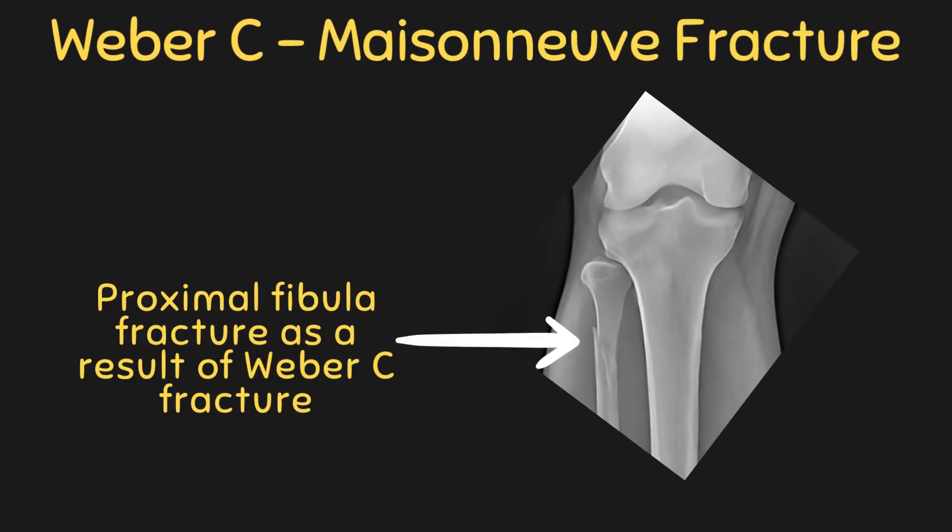We will now look at another type of injury associated with a Weber C fracture, known as a Maisonneuve fracture. A Maisonneuve fracture occurs more proximally in the fibula as a result of a Weber C type injury. Due to the high energy that travels up the leg from the extreme force of the injury, it is not uncommon for a Maisonneuve fracture to be present alongside a Weber C fracture. Other causes of Weber C and Maisonneuve fractures may include forceful external rotation of the ankle, high intensity sports, or simply a fall.